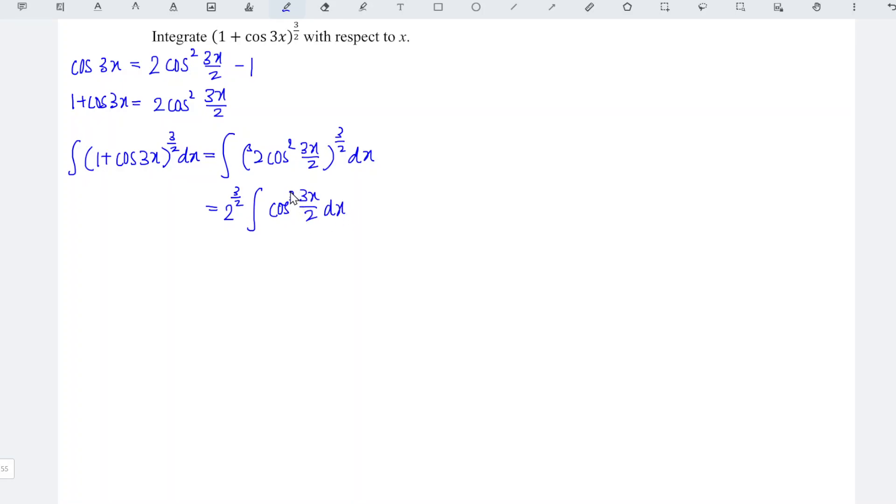Since cos is to the power of an odd number, which is 3, we can let u be equal to sine 3x over 2, since the power is an odd number.